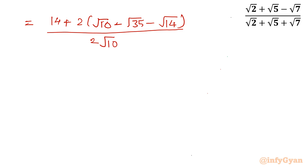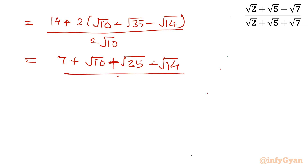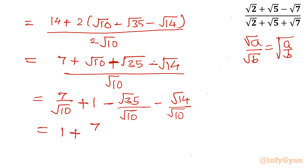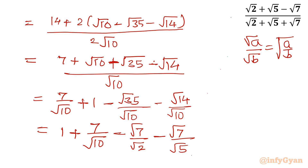Dividing numerator and denominator by 2: the numerator becomes 14 over 2 — which is 7 — plus root 10 minus root 35 minus root 14, all over root 10. Splitting: 7 over root 10, plus 1, minus root 35 over root 10, minus root 14 over root 10. Using root A over root B equals root of A over B, and canceling: we get 1 plus 7 over root 10, minus root 7 over root 2, minus root 7 over root 5. This is the same answer as Method 1.